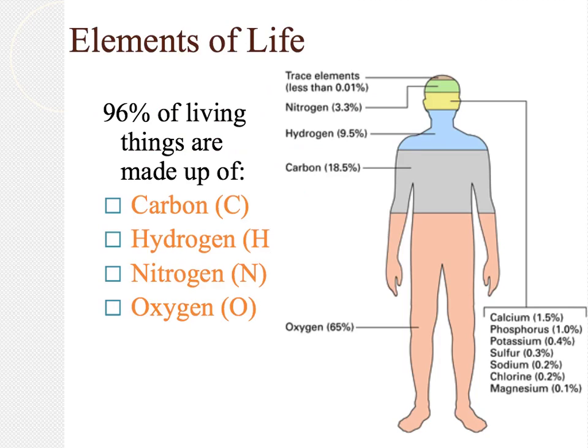When we talk about the elements that make up living things, 96% of all living things are made up of four main elements. That's carbon, hydrogen, nitrogen, and oxygen. So when we talk about these macromolecules, most of them use these elements in their structure. So keep an eye out for that.